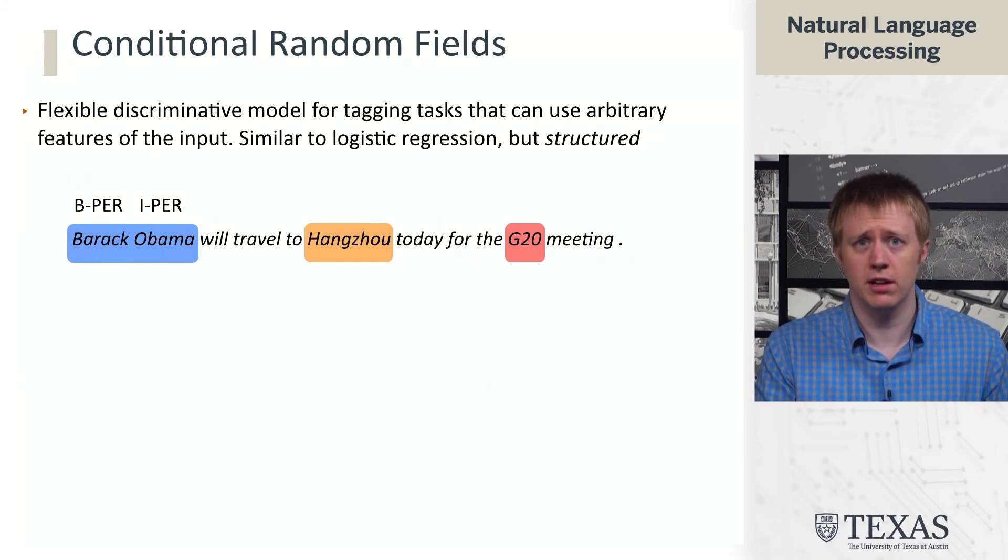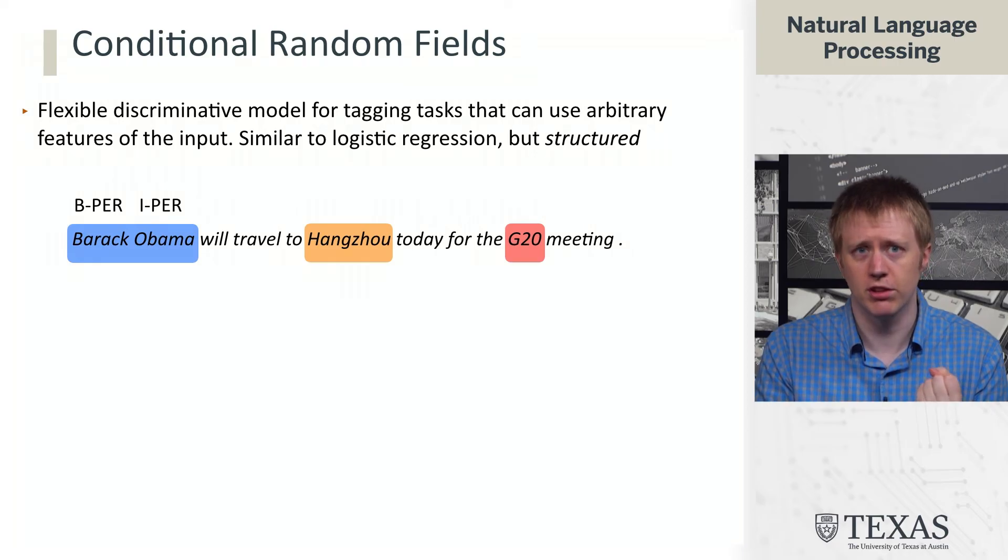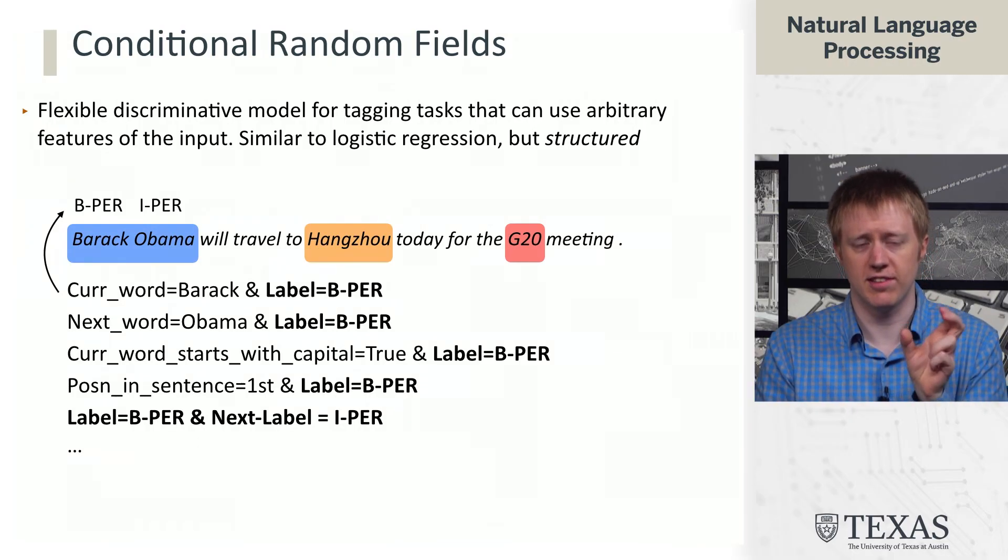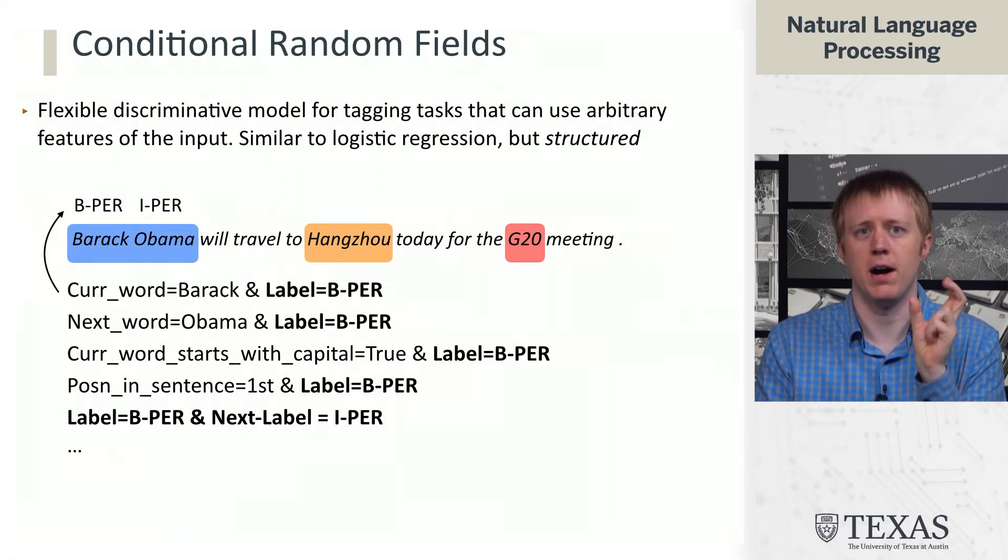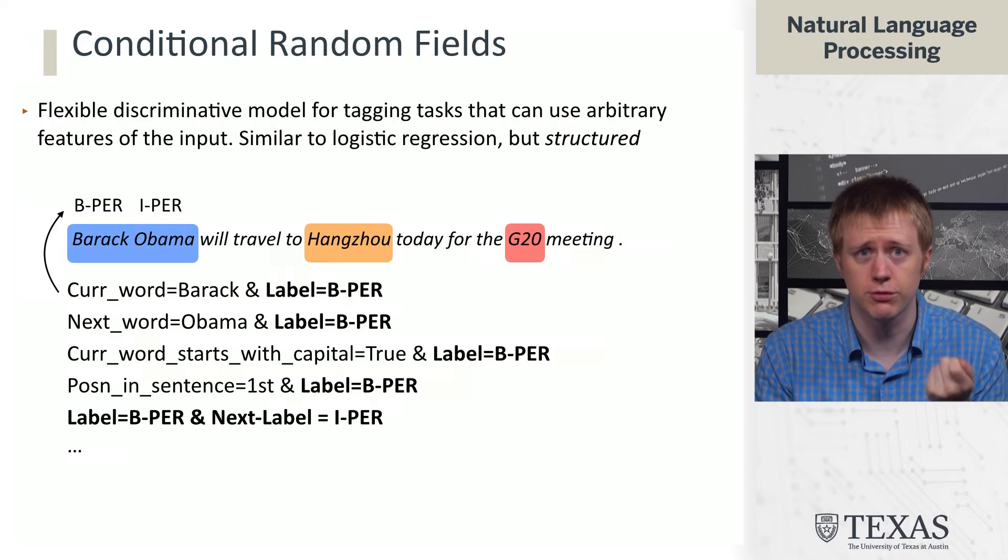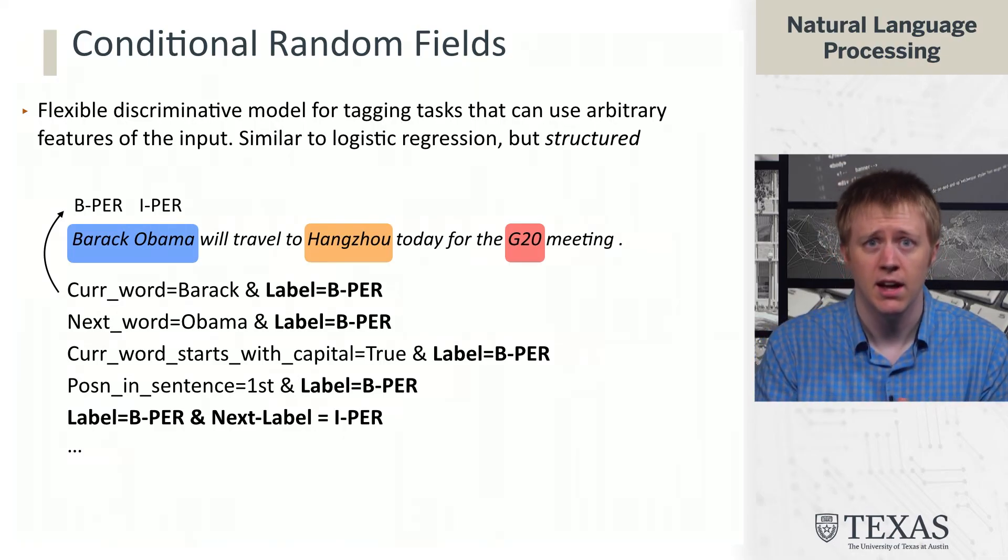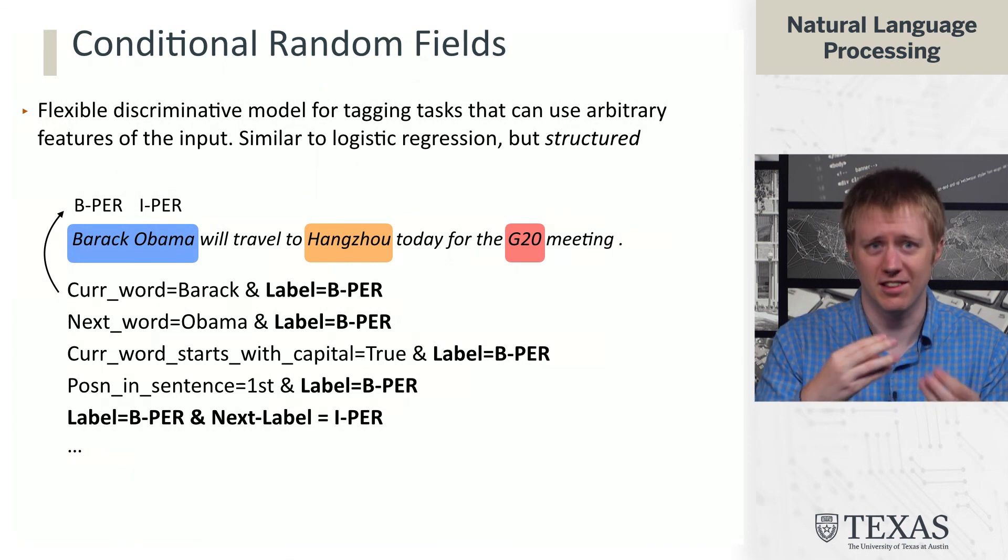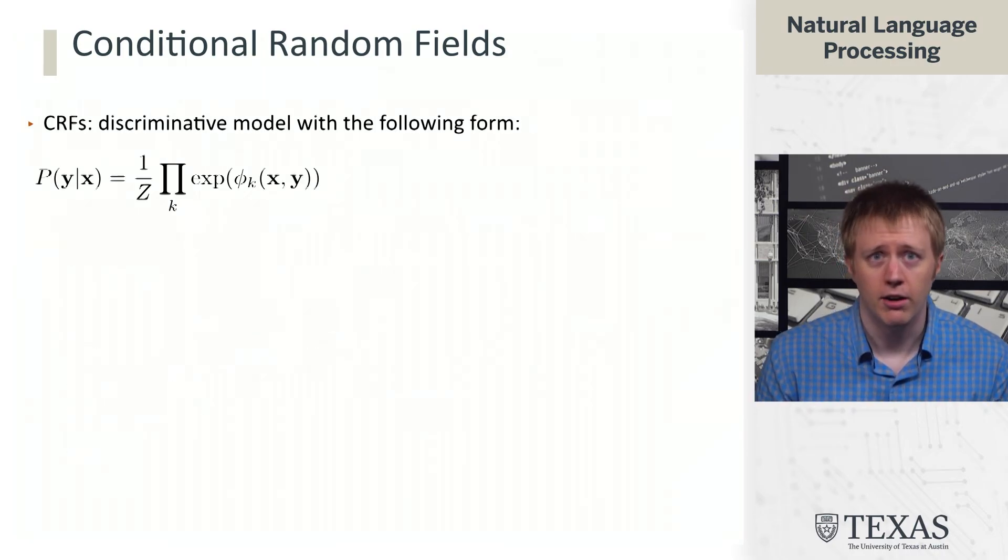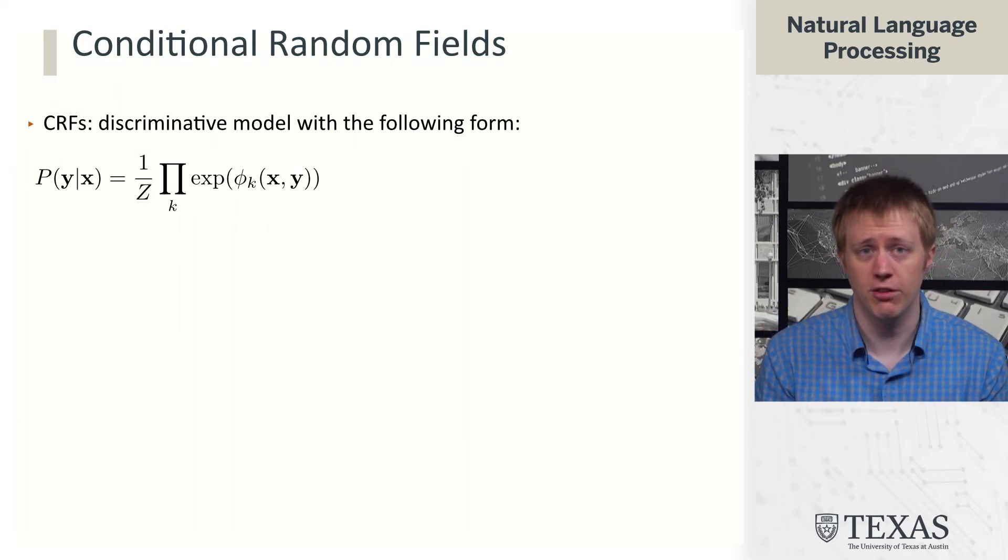And so what CRFs are going to do is they're going to allow us to build something that looks a lot more like logistic regression, but now in a structured fashion. And so when we think about predicting this B per tag, for example, we're going to be able to use features that say things like the current word is Barack. The next word is Obama. The current word starts with a capital letter. You can imagine that that's a very useful tag or feature in English for determining whether something is part of a named entity. Its position in the sentence is it's at the start of a sentence. And then we can look at things like the kind of label and the next label. So this is going to let us specify a much more flexible set of features that's going to allow us to handle this problem.